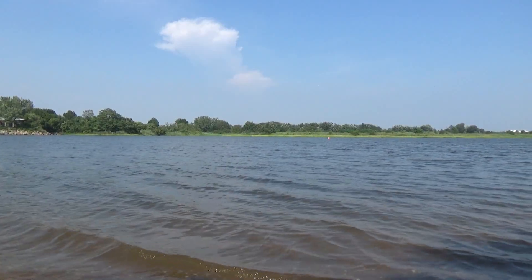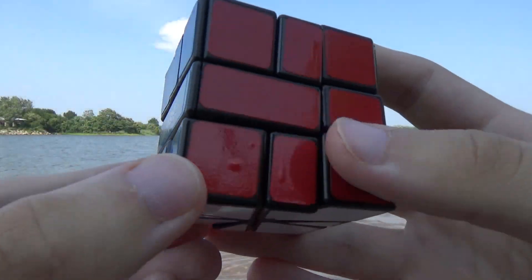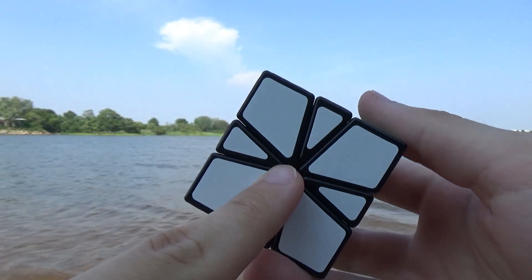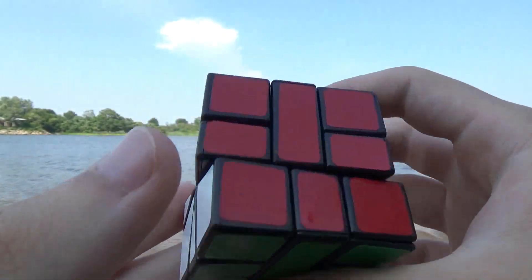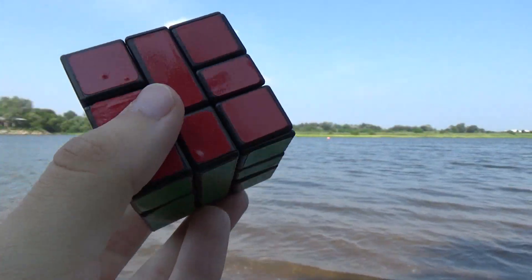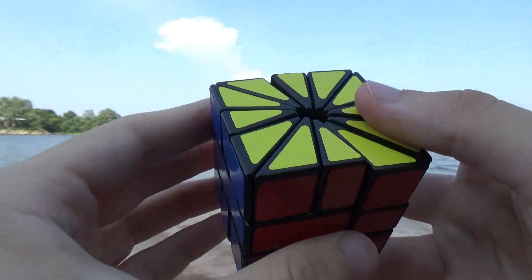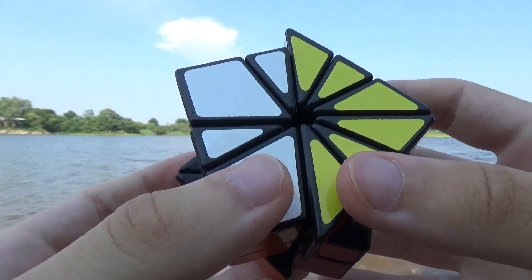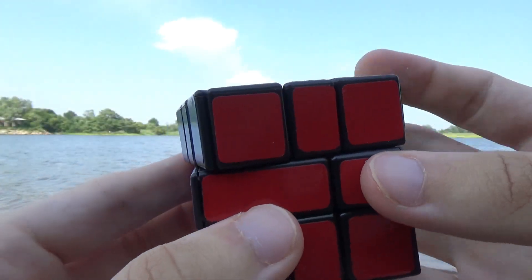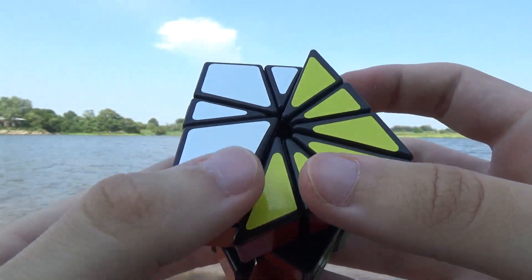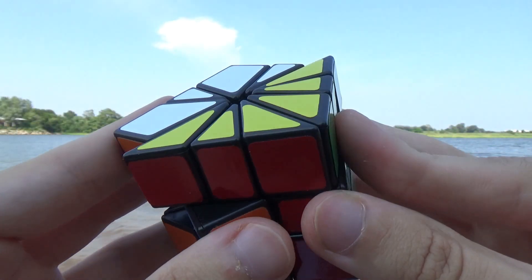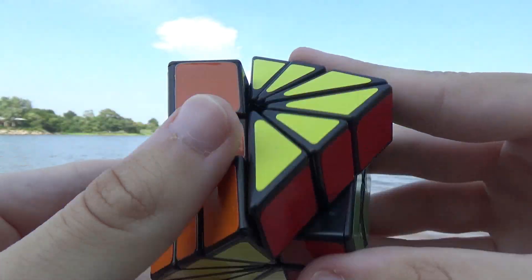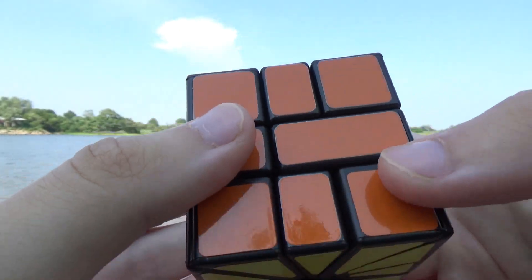The puzzle should be more difficult to solve than the Square-2 because the bandaged pieces restrict the moves you can make. It's also certainly more difficult to solve than a Square-1 because there are many positions that can be reached that would be impossible on the Square-1 due to its bandaging.